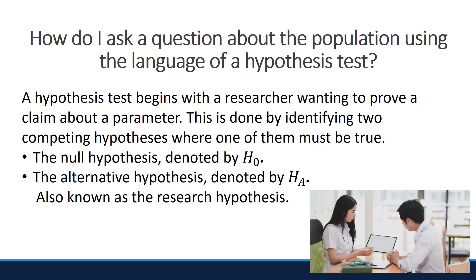A hypothesis test begins with a researcher wanting to prove a claim about a parameter. This is done by identifying two competing hypotheses where one of them must be true. The null hypothesis is usually denoted by H subscript 0, and the alternative hypothesis is denoted by H subscript A, or you may see H subscript 1. The alternative is also known as the research hypothesis. At the start of a hypothesis test, the null hypothesis is assumed to be true. The researcher believes the alternative is true, and it is the researcher's job to collect data and present enough evidence to prove the alternative beyond reasonable doubt. Since the null hypothesis is assumed to be true, we do not look for evidence in support of the null hypothesis.